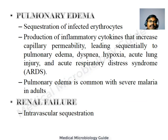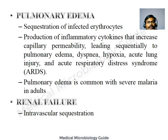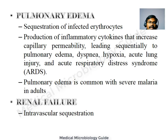Pulmonary edema is a complication of severe malaria in adults, due to sequestration of RBCs in the lung vasculature and production of inflammatory cytokines that increase capillary permeability, leading to pulmonary edema, dyspnea, hypoxia, acute lung injury, and acute respiratory distress syndrome. Renal failure can be due to intravascular sequestration of infected RBCs or blackwater fever.